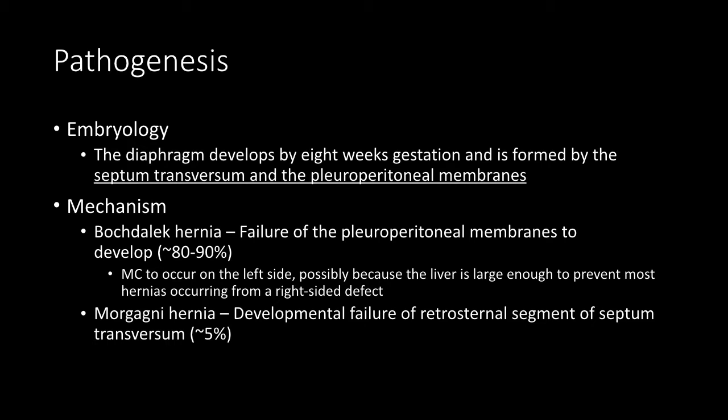The pathogenesis starts in the fetal development period and involves a few structures. The septum transversum and the pleural peritoneal membranes are the major players. CDHs occur due to a failure of these pleural peritoneal membranes to develop. This is the most common type of congenital hernia — it's called the Bochdalek hernia or defect.